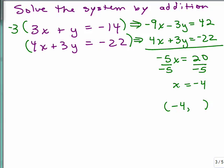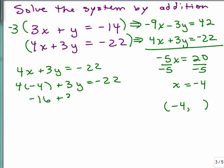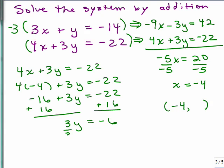So it looks like negative 4 is the x coordinate. Now that we know x is negative 4, I go back to either equation to solve for y. Let's take the second equation. We're going to put in negative 4 for x. Simplify the left side, add 16 to both sides, and we get 3y is negative 6. Divide by 3 and we get negative 2.